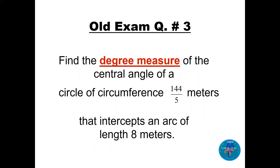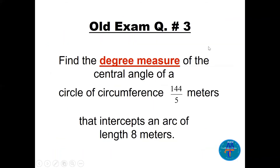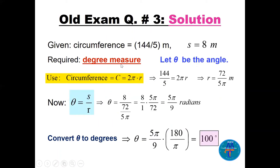Question number three: find the degree measure of the central angle of a circle with circumference 144/5 meters that intercepts an arc of length 8 meters. The given information: circumference C = 2πr = 144/5 meters, and arc length s = 8 meters. Using the circumference formula, 144/5 = 2πr, so we can find r.